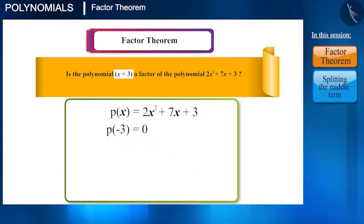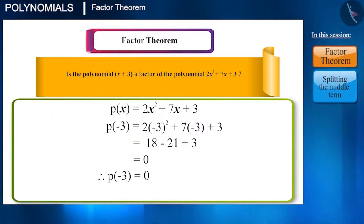That is, if we write the polynomial this way, we have to check whether p(-3) is 0 or not. So let's check it. Now we can say that, according to the Factor Theorem, (x + 3) is a factor of this polynomial.